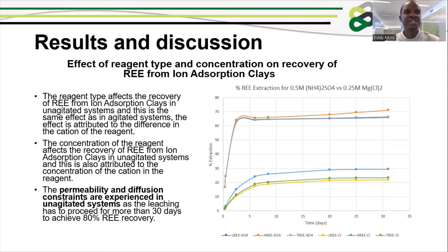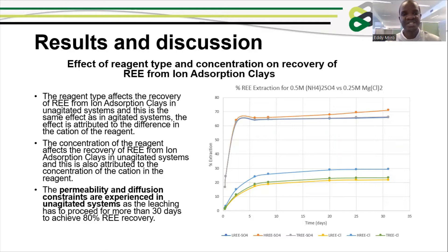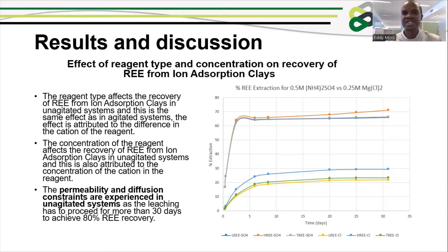For graded systems, investigation was carried out previously. The key difference between this investigation and the previous one is the permeability and the current constraints experienced in unagglomerated systems, as would be experienced in heap leaching or in-situ leaching. Results show that leaching has to proceed for more than 30 days to achieve 80% recovery. Without agglomeration, even at laboratory scale, the heap overflows with solution that does not reach the bottom for collection.